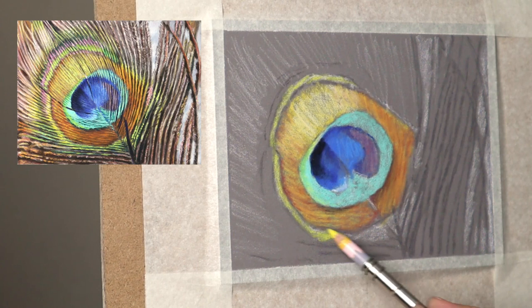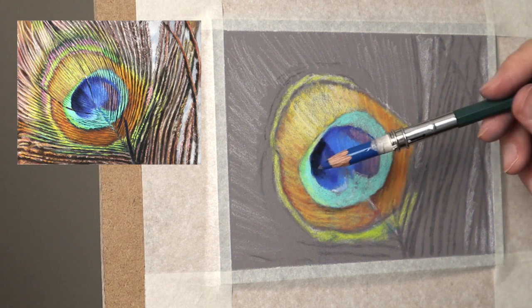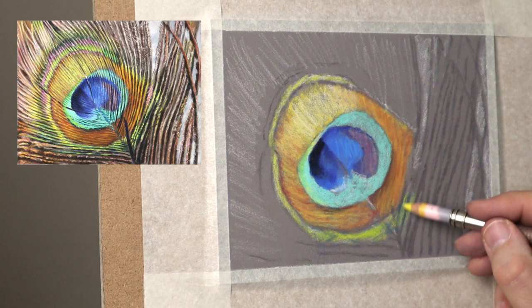Now for the really zingy areas I'm putting lemon yellow in there and then mixing a bit of that pure blue in there to create a nice vivid green. So I'm putting the yellow down first and then that will give that zinginess to the greenness when you actually put that blue over the top of it.